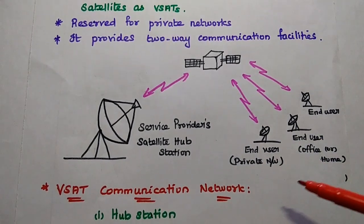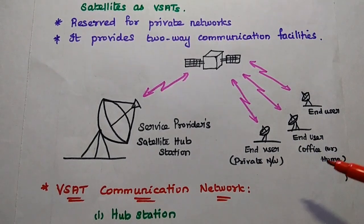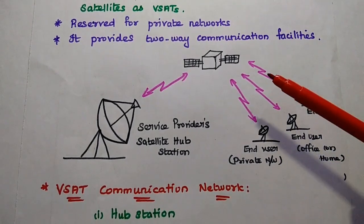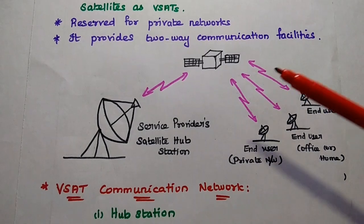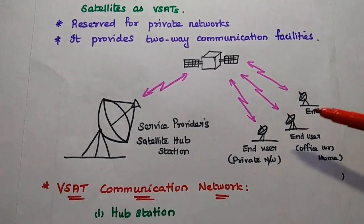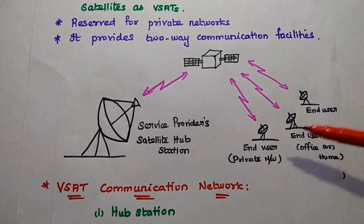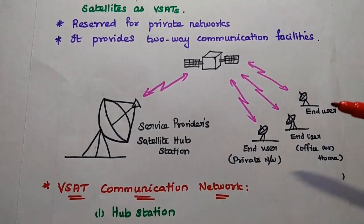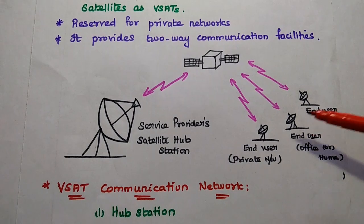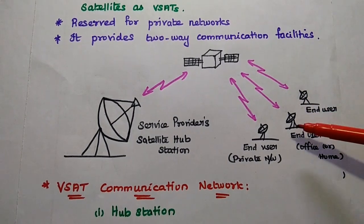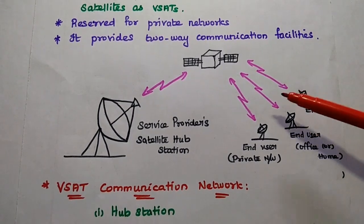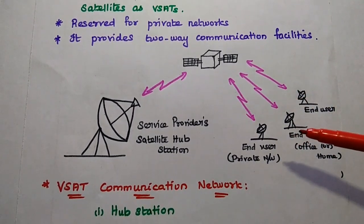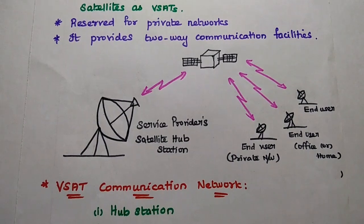The V-SATs in the network access satellite services using multiple access methods. These include FDMA, CDMA, and DAMA to access services from the Service Provider's Hub Station through the satellite.